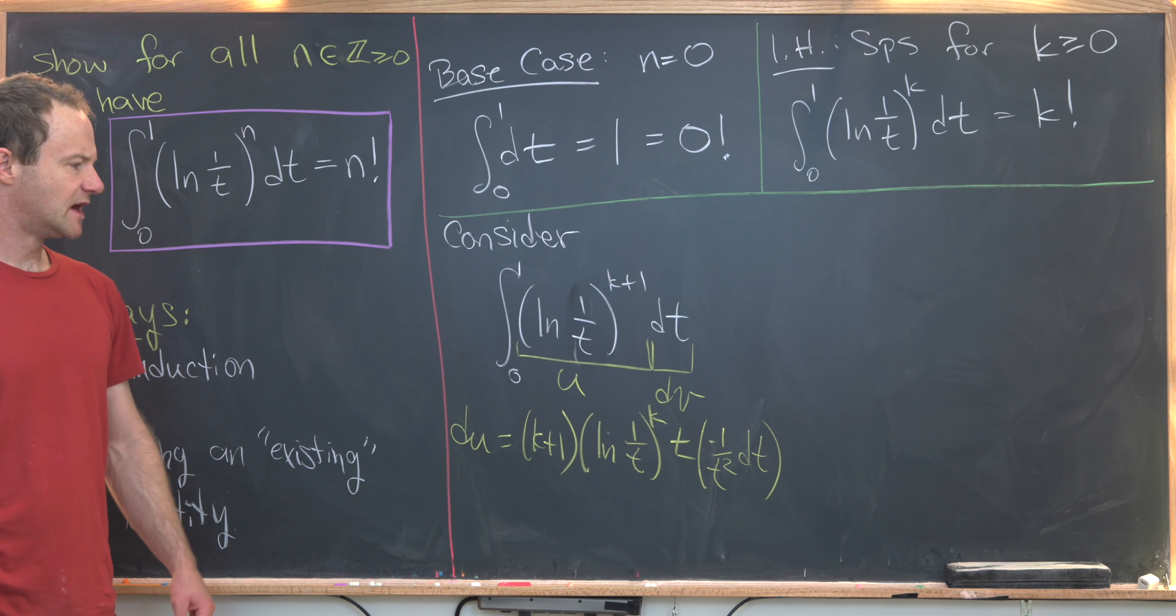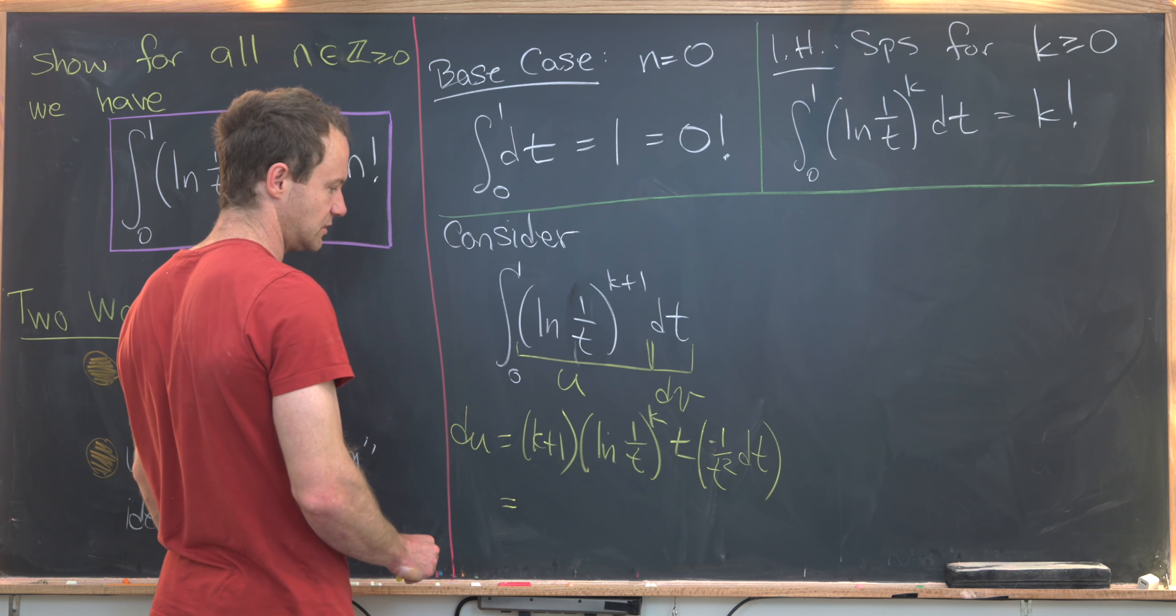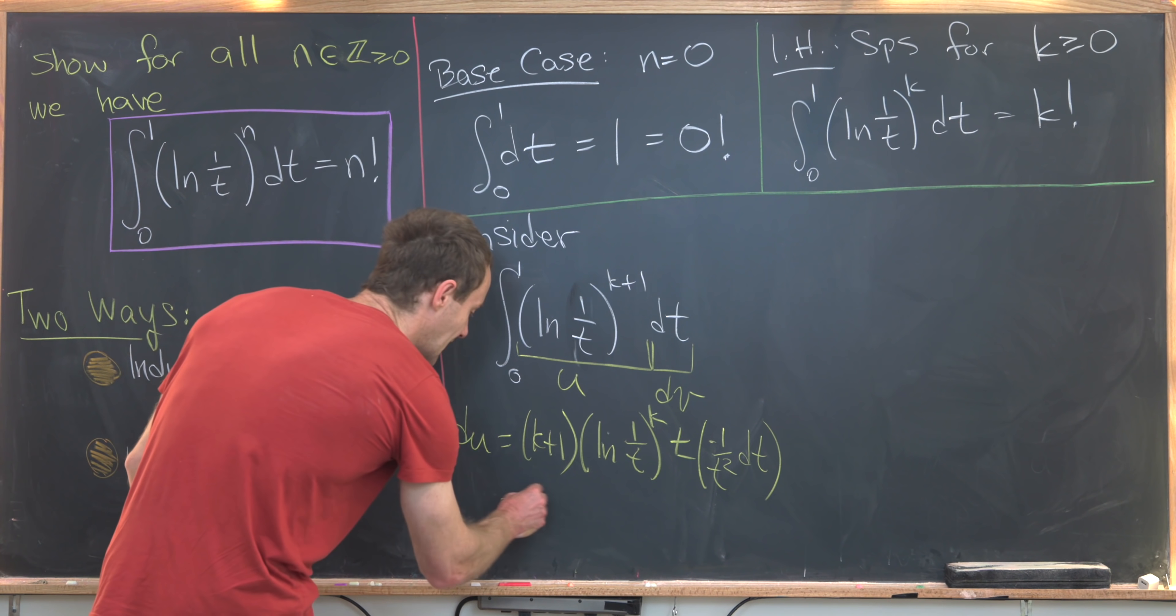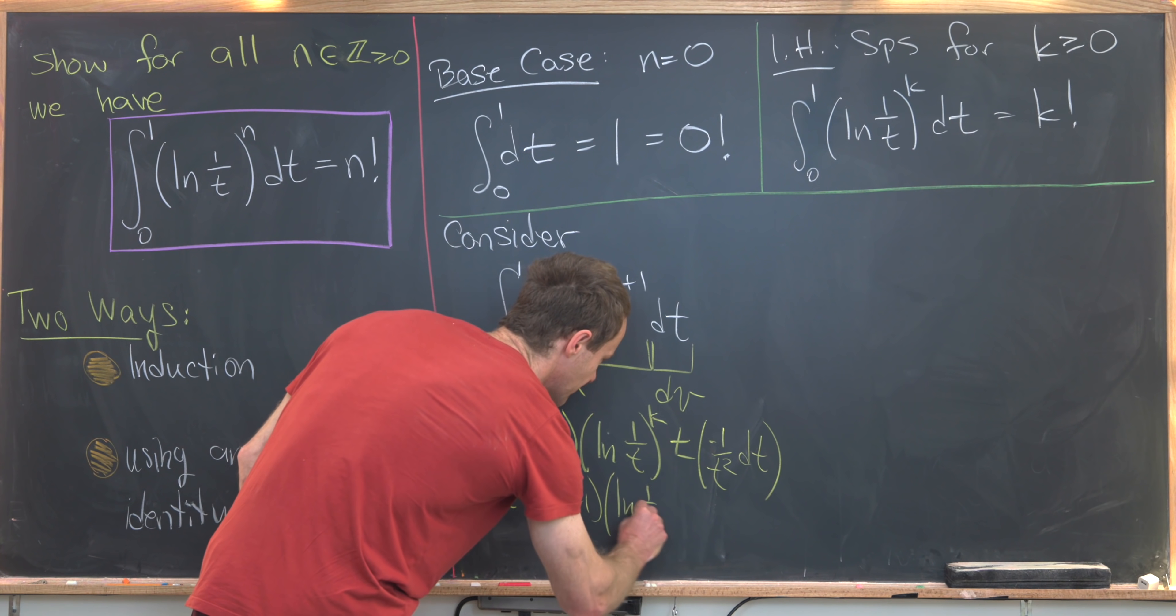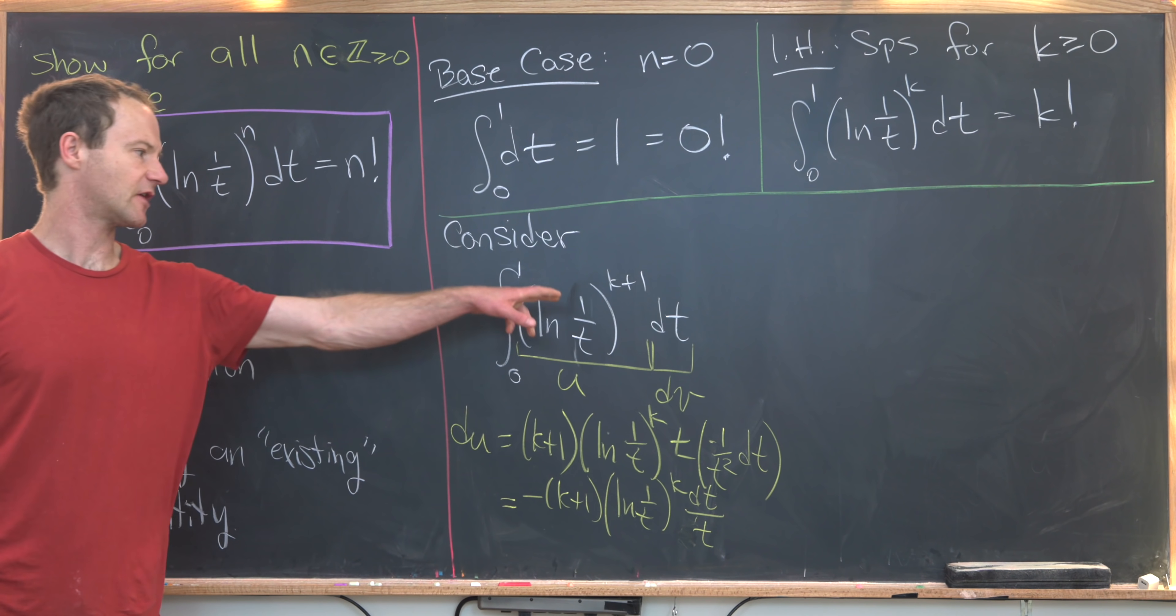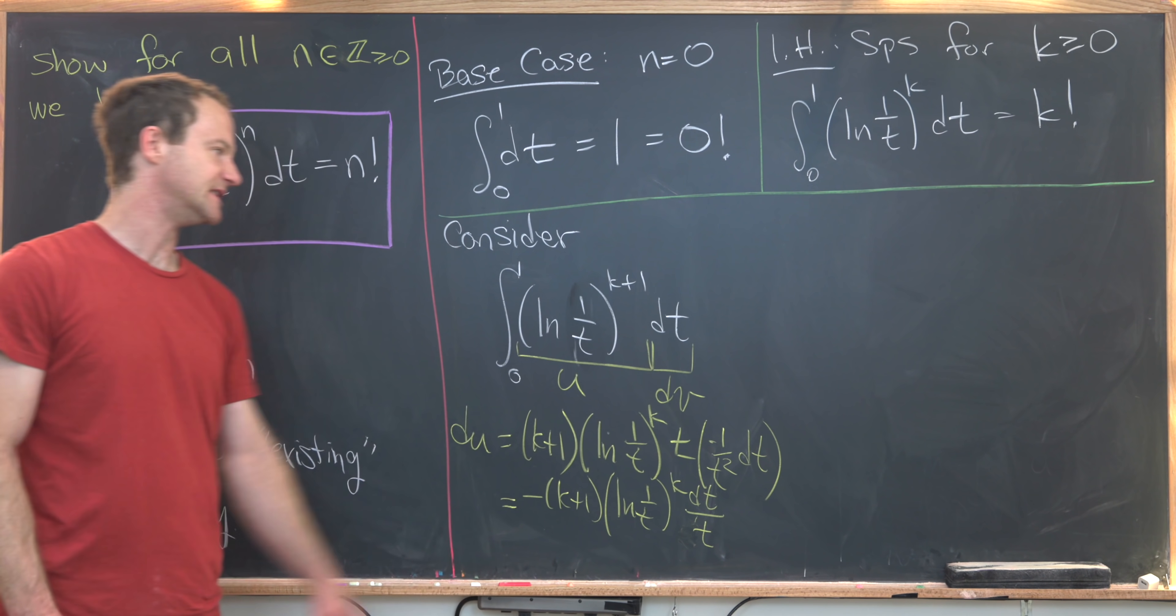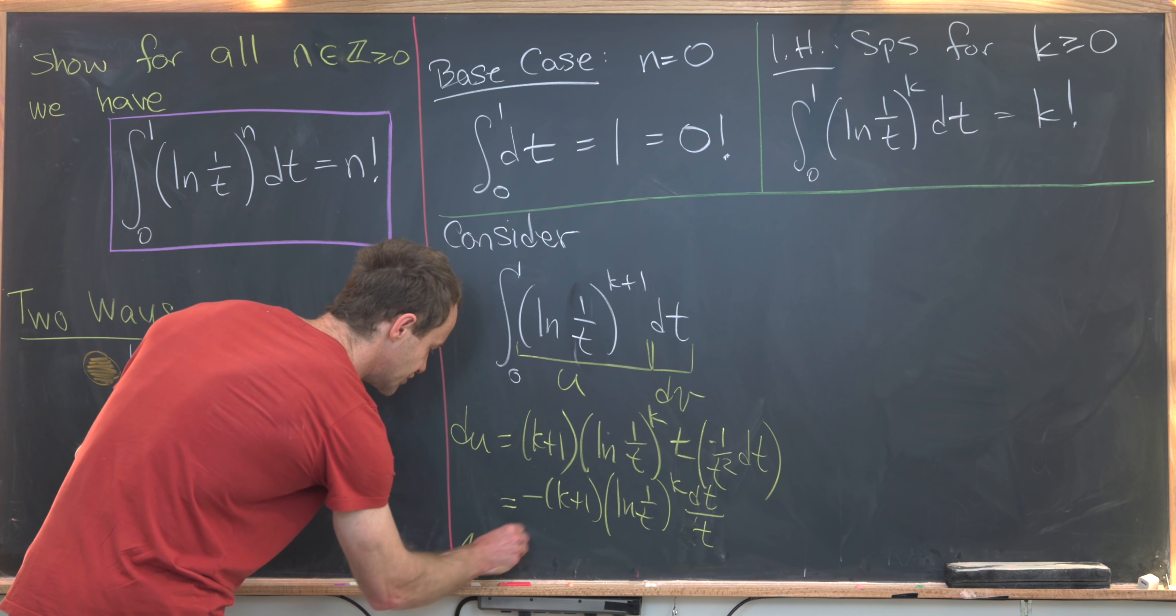So let's see what sort of simplification could be done here. We see that that is equal to minus k plus 1 times the natural log of 1 over t all to the k times dt over t. Then we also have to calculate v, given that dv is dt, but that's pretty easy. That means that v is just t.